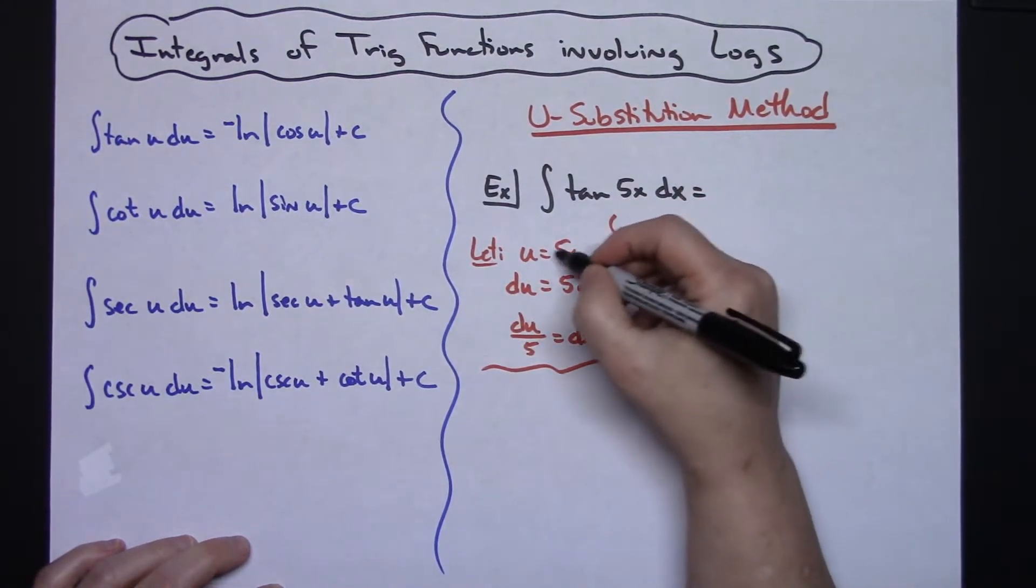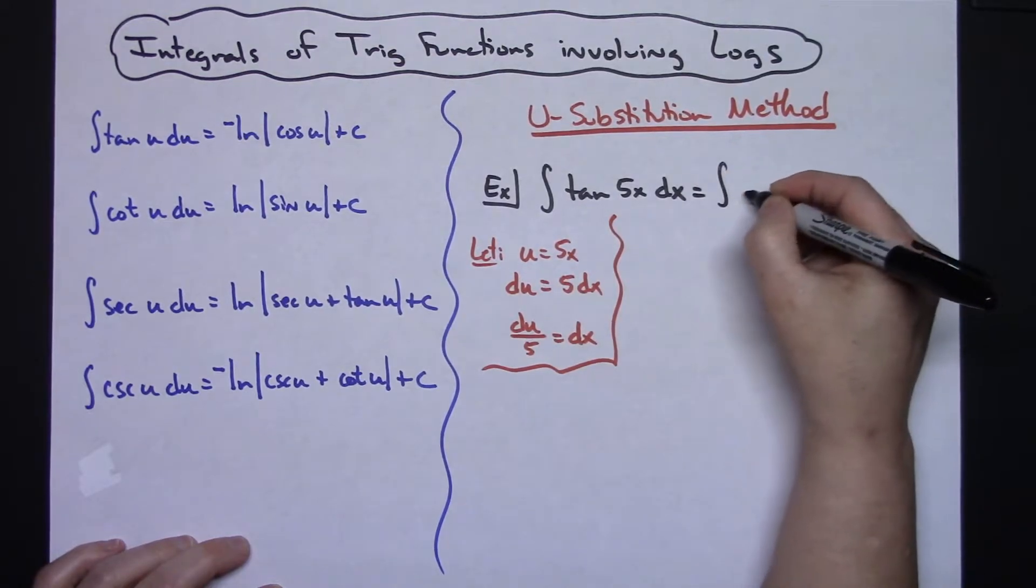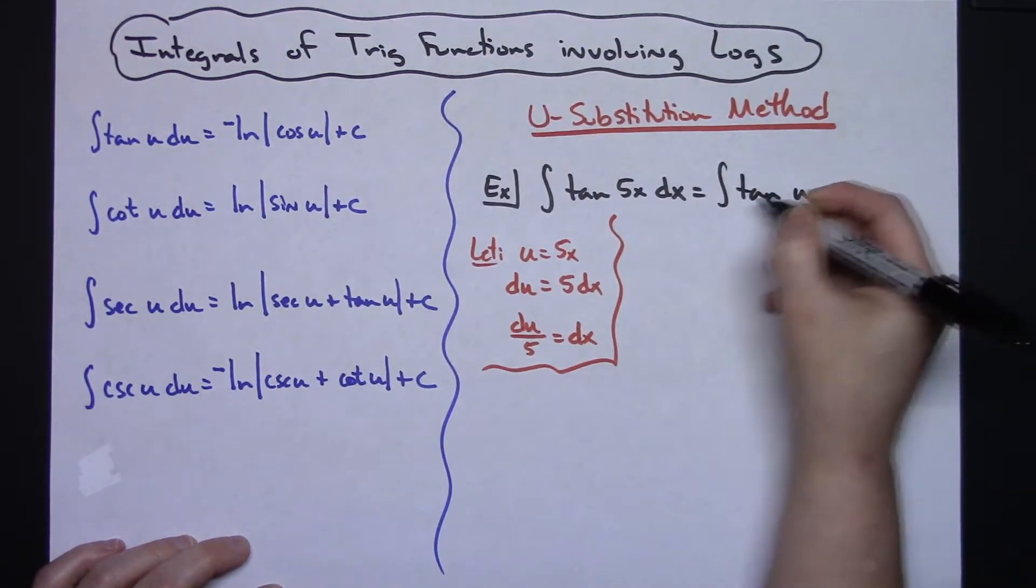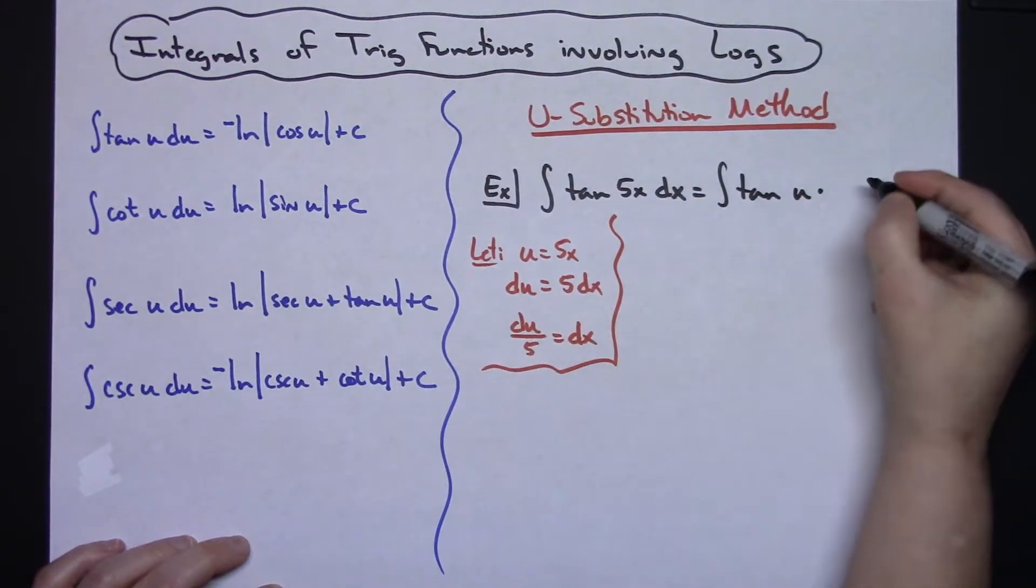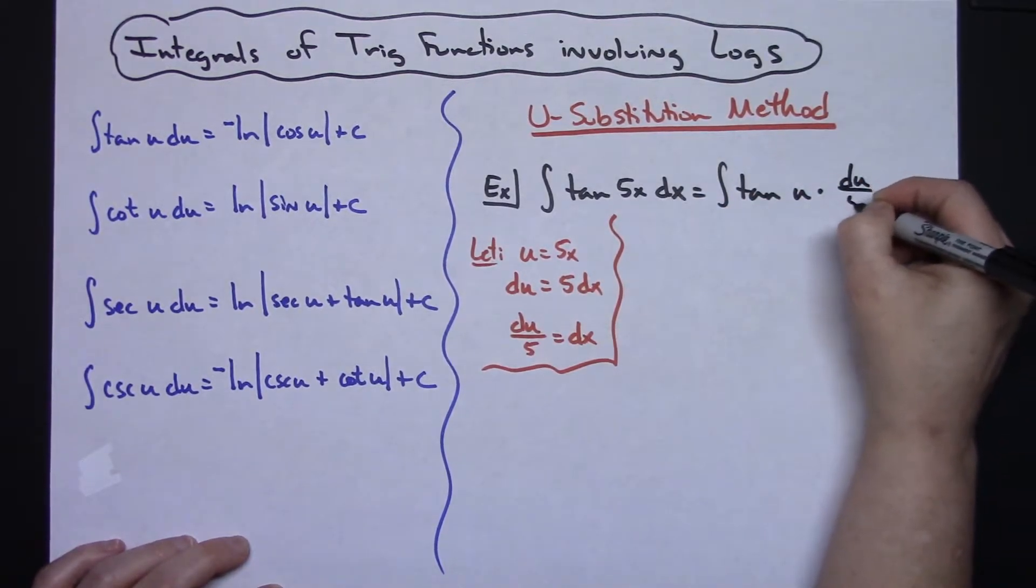I can replace the 5x with a u, so I'm going to integrate tangent of u and then replace my dx with du over 5.